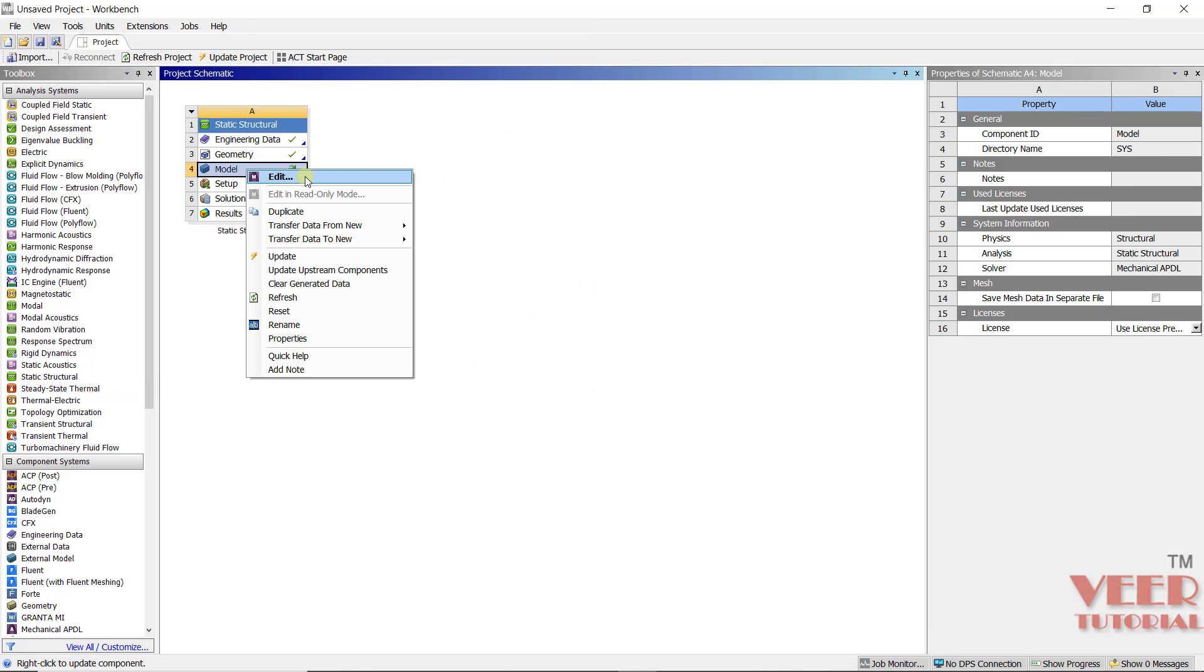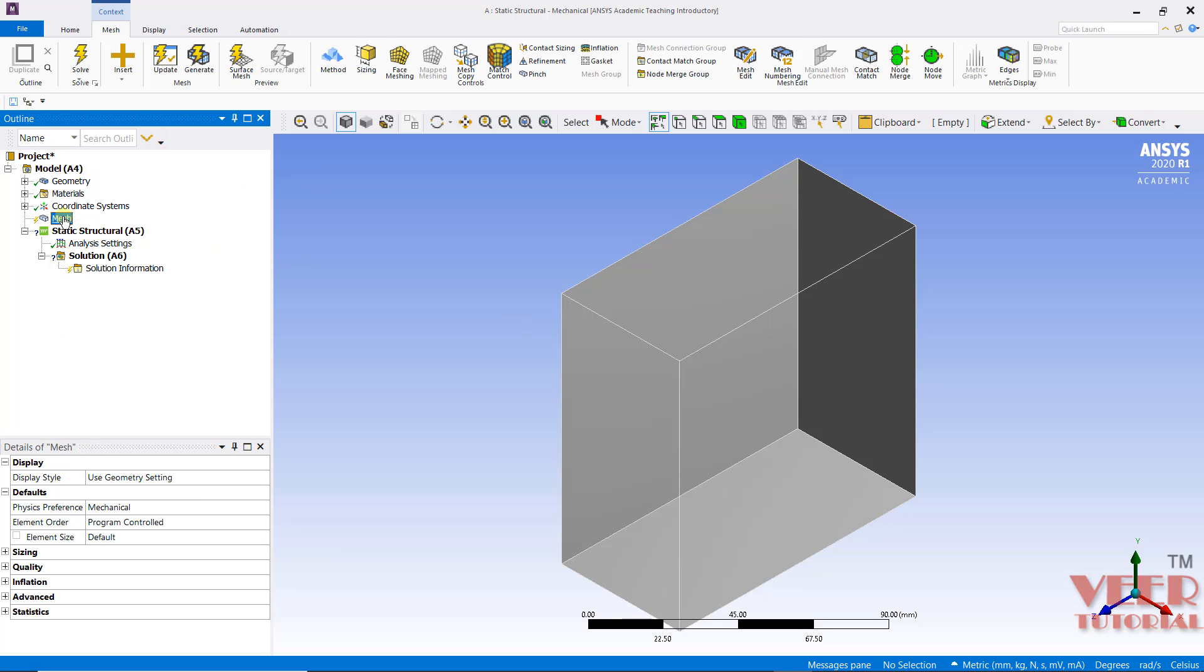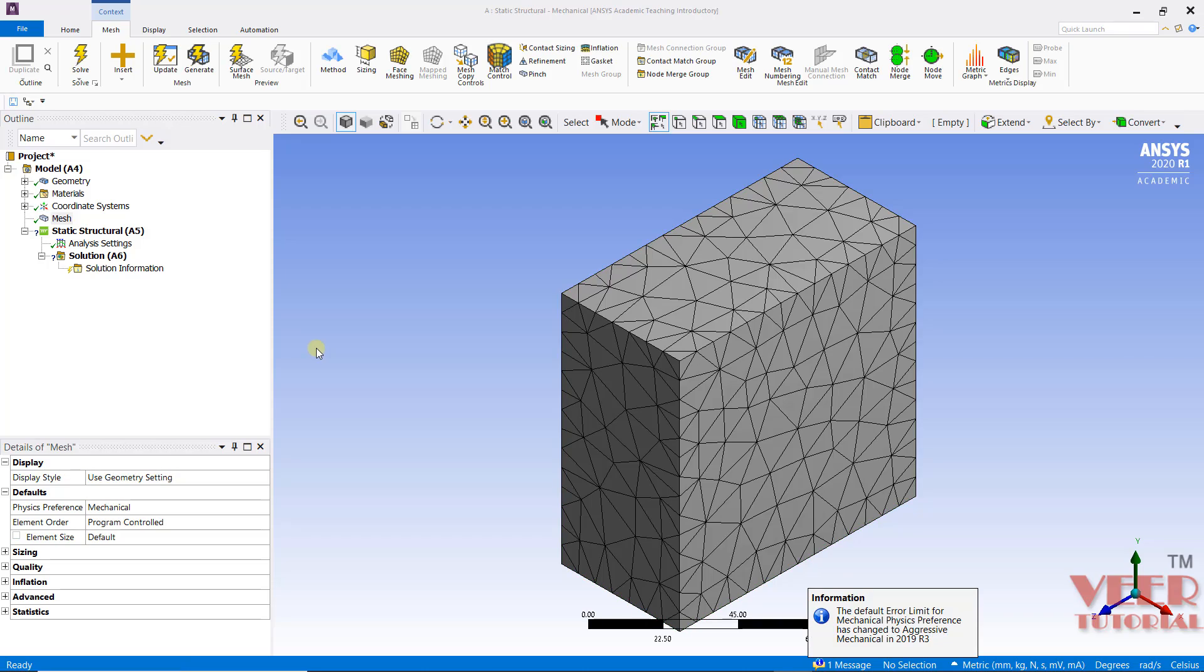After that I will go to edit. Now I will do the meshing of this. So I will go to mesh, right click and then generate the mesh. So once the mesh is generated,